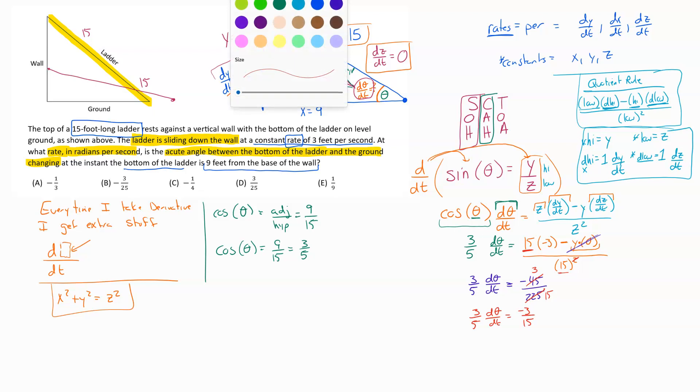And now we'll go ahead and just multiply by the reciprocal here. We're looking to get d theta dt by itself. So multiply by 5 over 3, multiply by 5 over 3. And we'll end up canceling that 3, that 3, all that's going to cancel out. We get d theta dt is going to equal, this 3 is going to cancel with that 3, this 5 is going to cancel with that 5. And so we're going to end up with negative 1 third for our final answer. So d theta dt in this situation is negative 1 third. That would be option A.